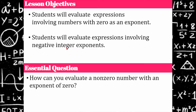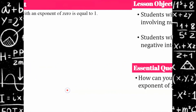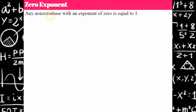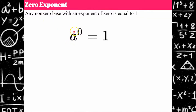Our leading question is: how can you evaluate a non-zero number with an exponent of zero? If we have a non-zero base with an exponent of zero, it's equal to one. So a to the zero — meaning any non-zero base — raised to an exponent of zero is equal to one. If you watch my video on proving this zero exponent, you'll understand it better, so please check out that video.